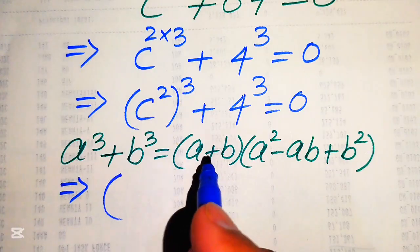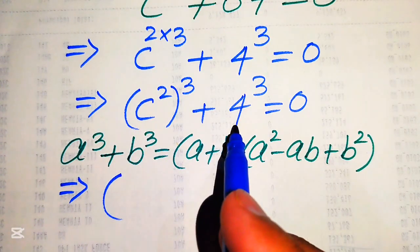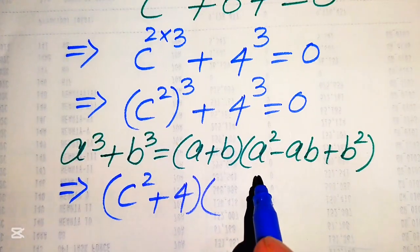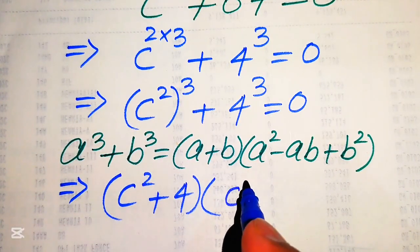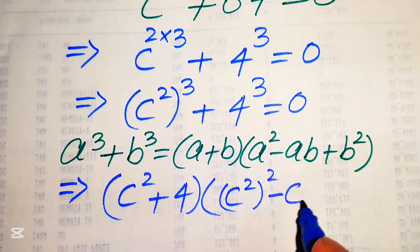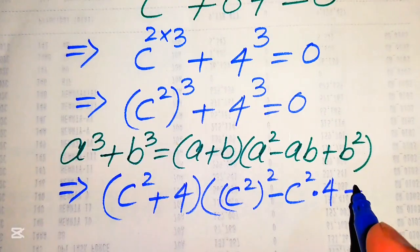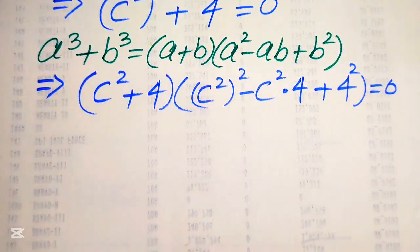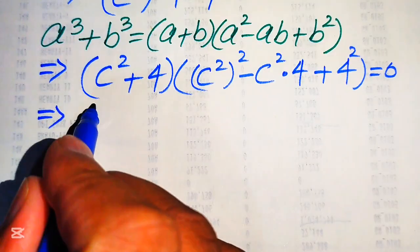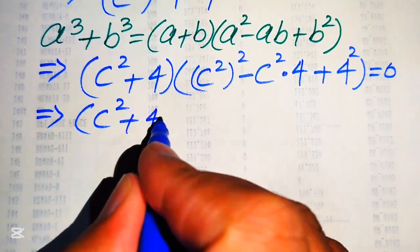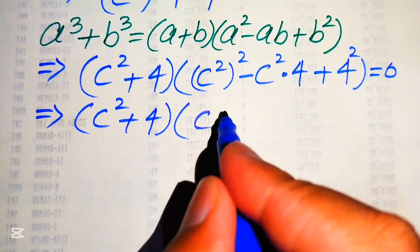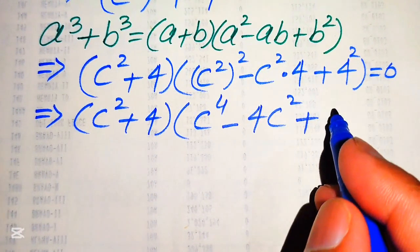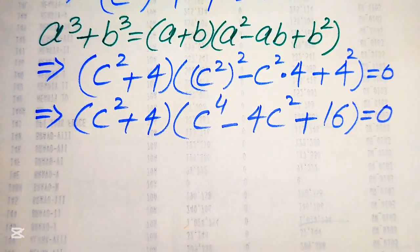According to the formula, where a = c² and b = 4, we write the equation as (c² + 4)(c⁴ - 4c² + 16) = 0. We simplify by multiplying the exponents and combining like terms: c² + 4 times c⁴ - 4c² + 16 equals 0.